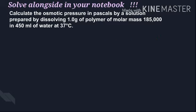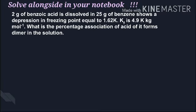Next question is based on Van't Hoff factor. 2 grams of benzoic acid is dissolved in 25 grams of benzene, showing a depression in freezing point equal to 1.62 Kelvin. Kf is 4.9 Kelvin kilogram per mole. What is the percentage association of acid as it forms dimer in the solution?